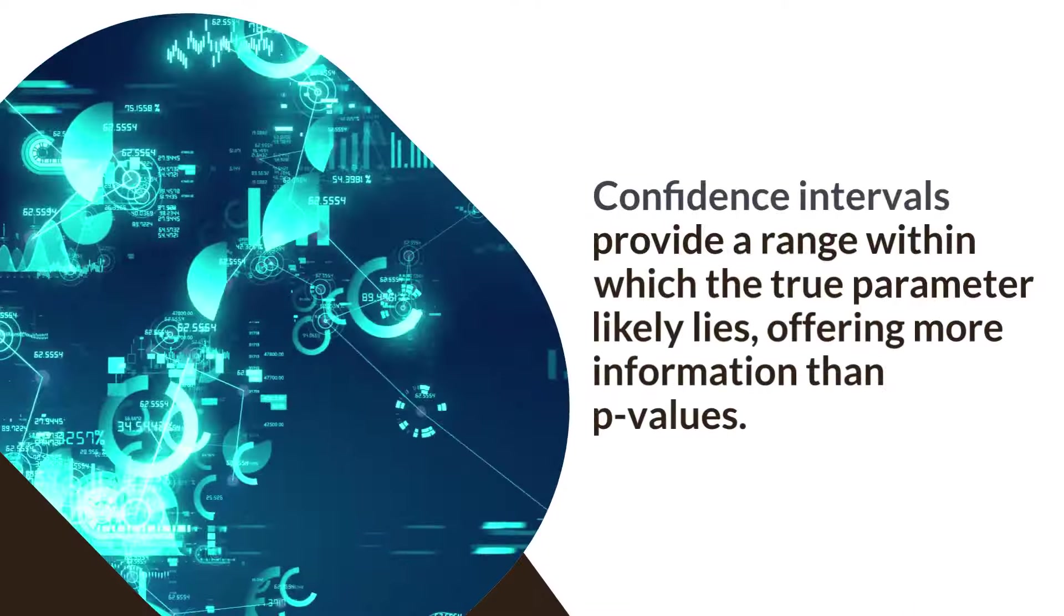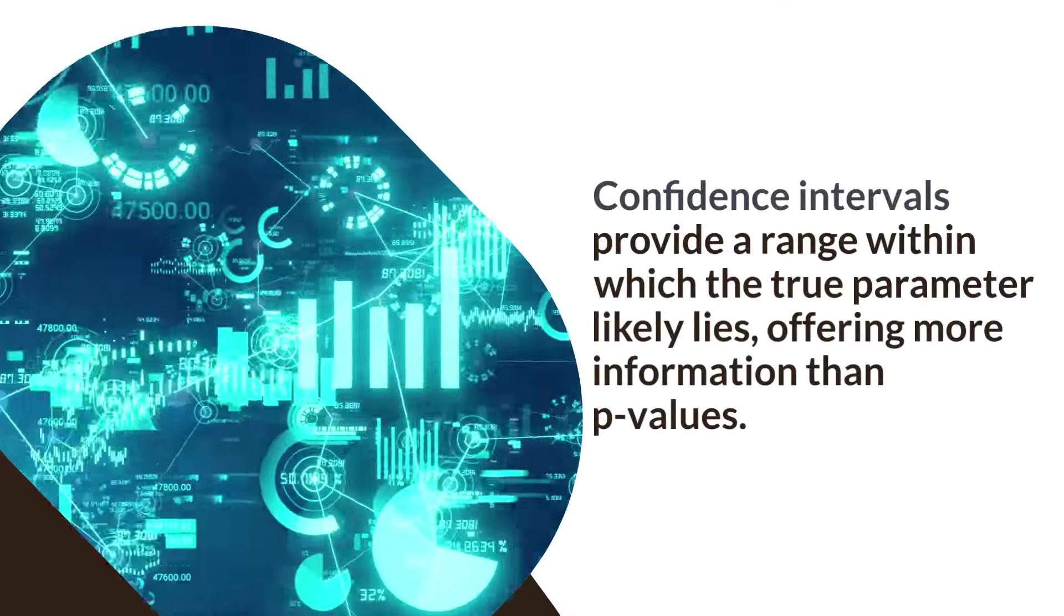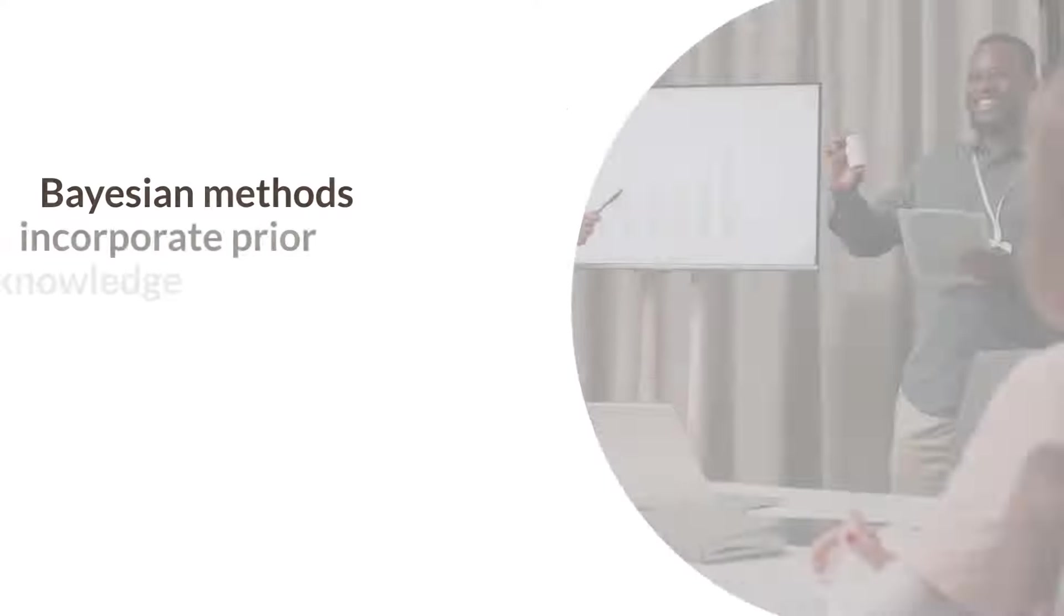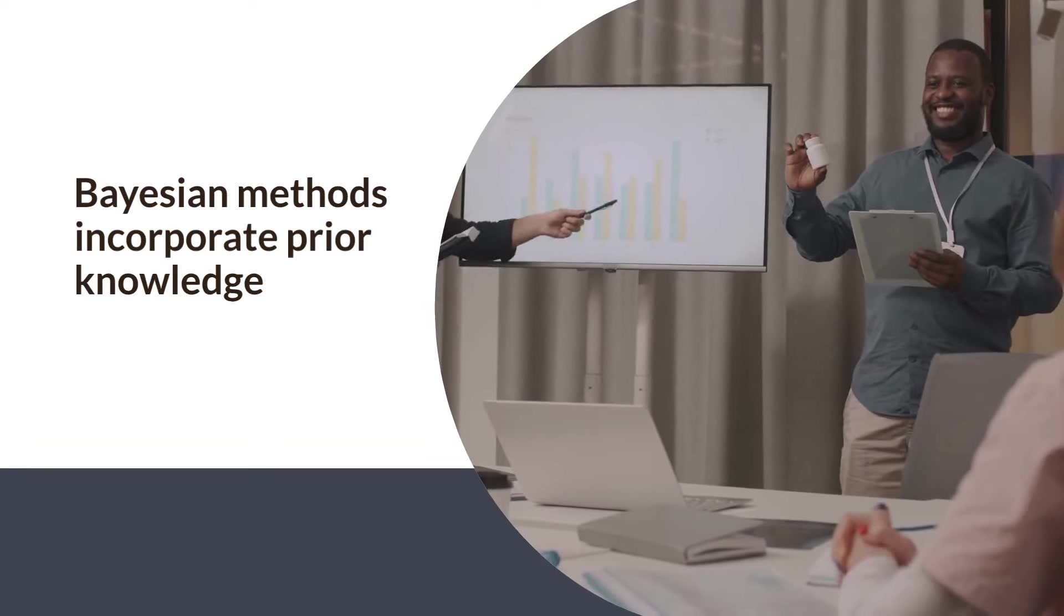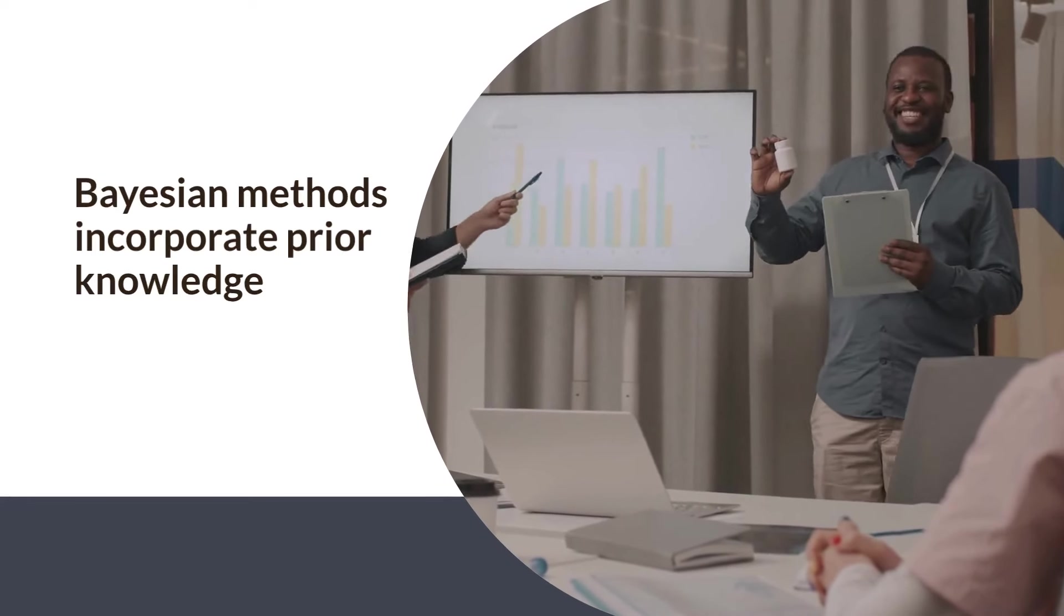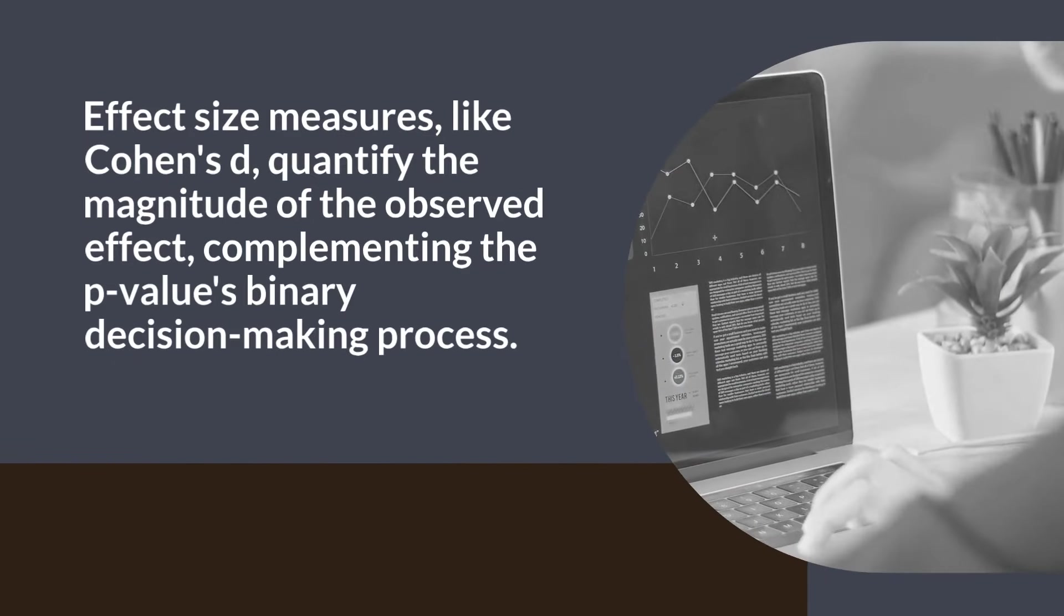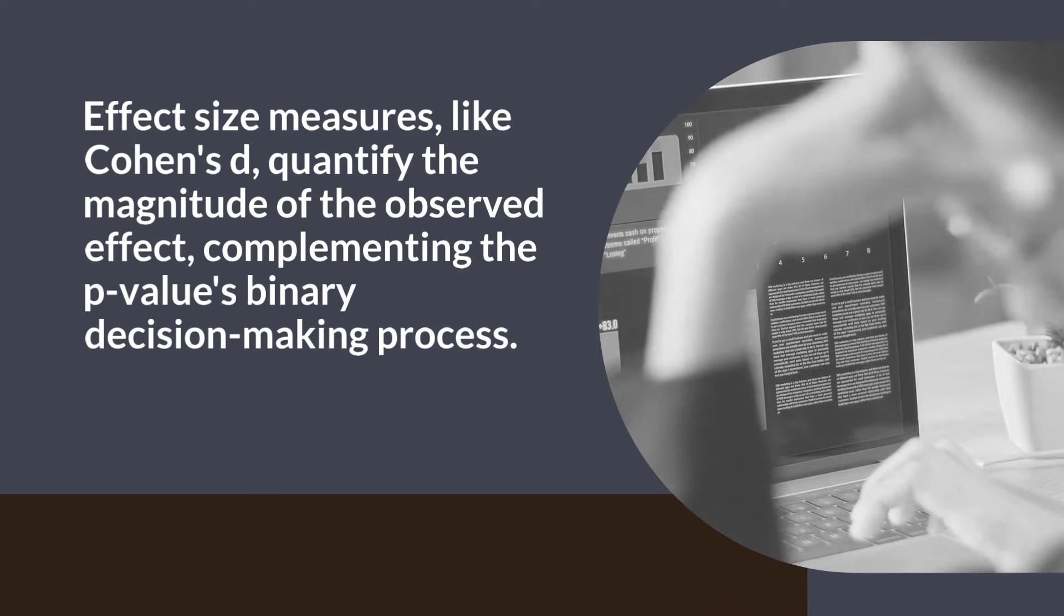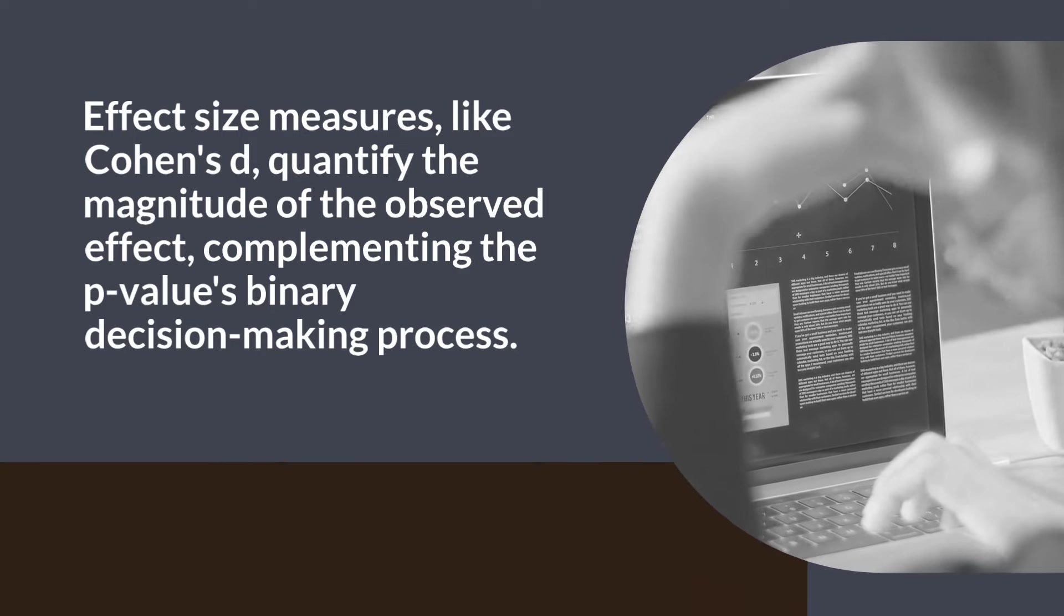Confidence intervals provide a range within which the true parameter likely lies, offering more information than p-values. Bayesian methods incorporate prior knowledge, providing a probability distribution of the parameter, which can be more intuitive. Effect size measures, like Cohen's d, quantify the magnitude of the observed effect, complementing the p-value's binary decision-making process.